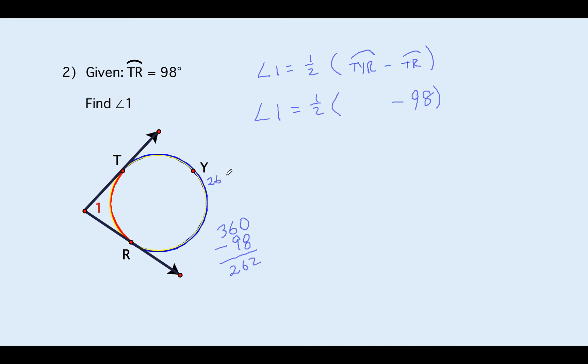That makes sense. This is 262, this one here is 98, so now we're going to plug that in. Angle one is equal to one half of 262 minus 98 which is 164. Angle one is equal to 82 degrees.